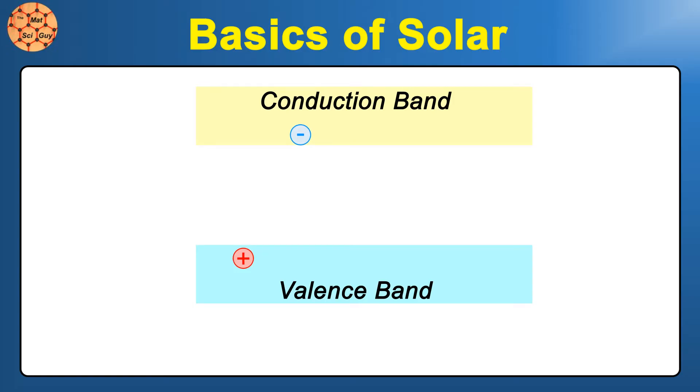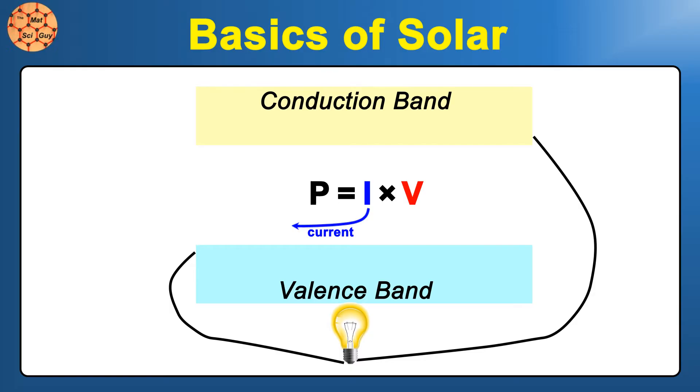We basically have some potential energy stored up in the electron-hole pair, and if we can separate them, we can have them complete a circuit and do useful things. Power is current times voltage, and both can be easily visualized here. Current is just the number of charges moving through the wire, which is directly correlated with the number of electron-hole pairs we make, and voltage is simply this potential difference.